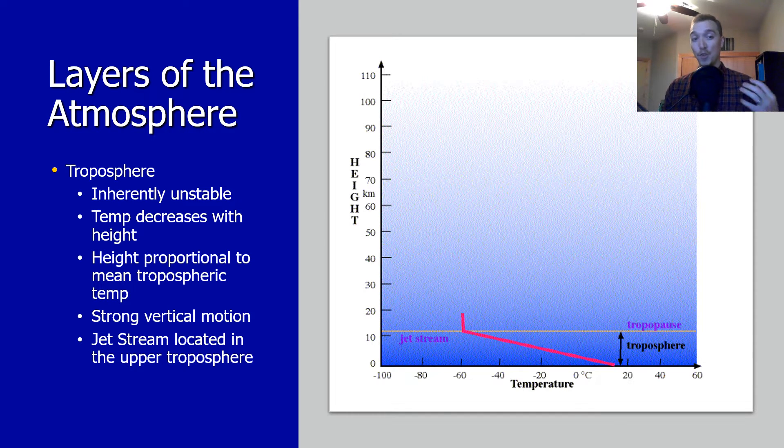There's strong vertical motion in this. The height in the troposphere is variable, related to the mean tropospheric temperature. That's why as you go from the equator to the poles, you have a decreasing height of your troposphere because there's decreasing temperature. And the jet stream, the thing that controls most of the dominant weather patterns in a given season for us, is located in the upper troposphere as well.